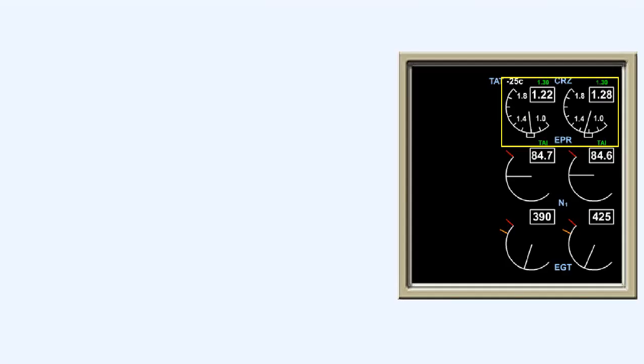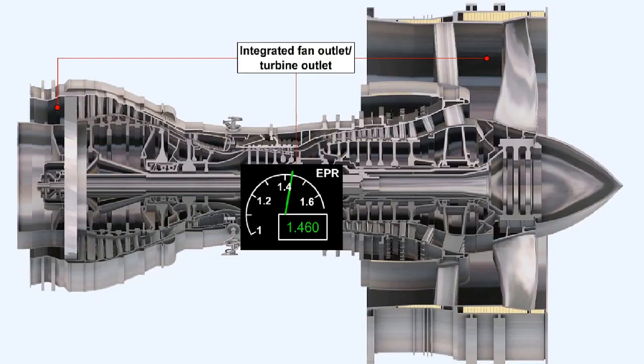High ratio bypass engines use the engine pressure ratio EPA as an indication of engine power output. The ratio is that between the exhaust pressure and the engine intake pressure. On some large turbofan engines, the values of the turbine discharge pressure and the fan outlet pressure are integrated. The figure thus obtained is then compared to the compressor inlet pressure to produce what is called integrated EPA.